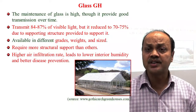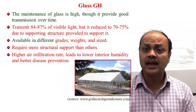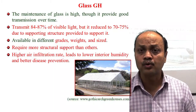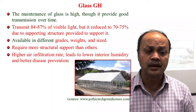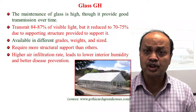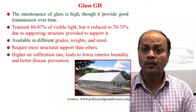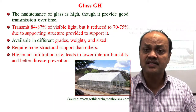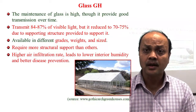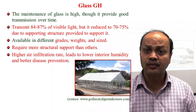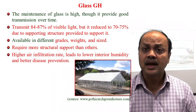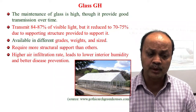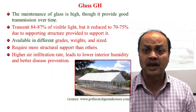The glass greenhouse is the oldest technology, and its name reflects the original use of glass as cladding. When choosing any cladding material, you must consider cost, durability, how much light transmission occurs over time, structural strength requirements, and the grades, weights, and sizes available. Glass houses require more structural strength than plastic film greenhouses.